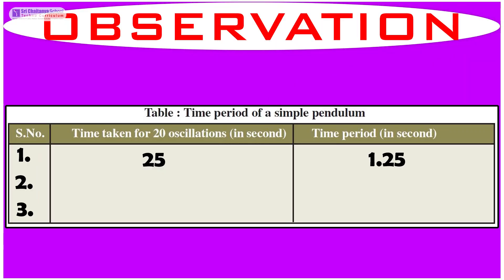The observation is: the first time taken for 20 oscillations is 25 seconds, and the time period is 1.25 seconds.